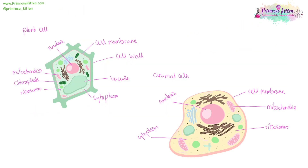You'll notice there are several features of a plant cell that an animal cell doesn't share. For example, the cell wall, the vacuole, the chloroplasts. If you want a copy of these pictures yourself, you can download them in the free revision guide from my website.